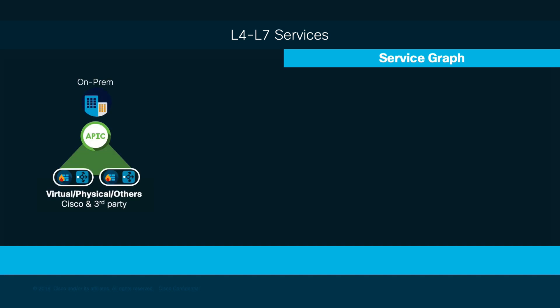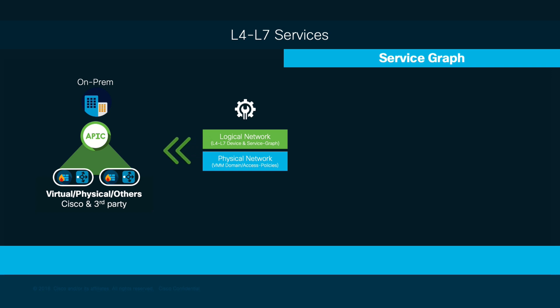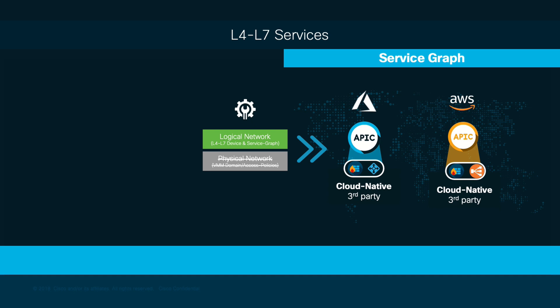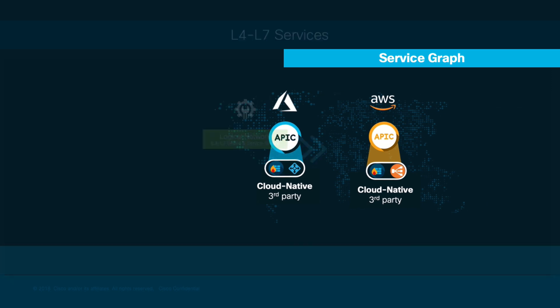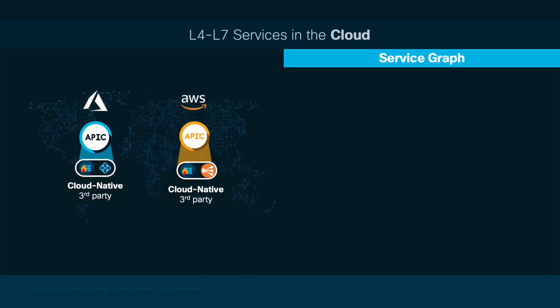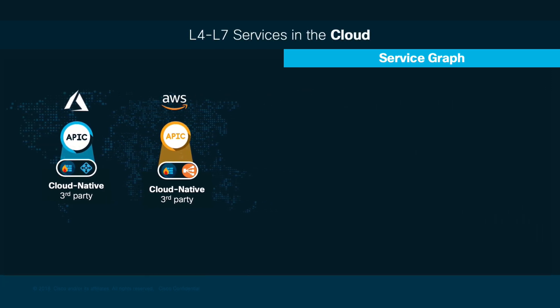As you have seen in past chapters, implementing L4-L7 devices is quite easy on ACI. As you may remember, in an on-prem environment you have to configure access policies. In cloud-only mode, it is not necessary to execute this type of configuration. Now let's get started configuring these components in Azure and AWS.